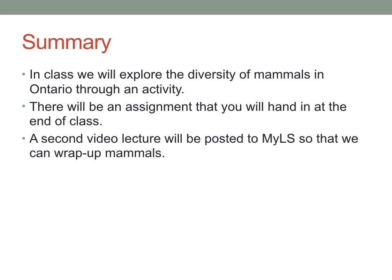We're going to pick up this conversation in class, where we're going to explore the diversity of mammals in Ontario through the use of a dichotomous key and a collection of skulls. We'll use that dichotomous key and some of the anatomical structures found in mammal skulls to explore what kind of mammals we've got. There will be an assignment associated with this that you'll complete in class and hand in at the end, which will be part of your participation mark. Then we'll wrap up mammals with a short follow-up video lecture primarily focusing on the conservation aspect of mammals.